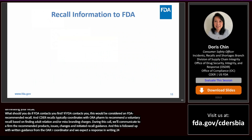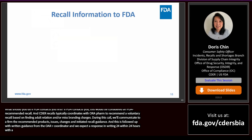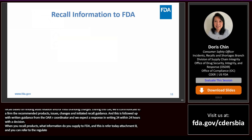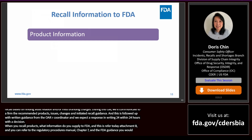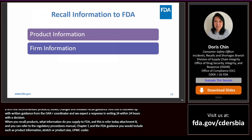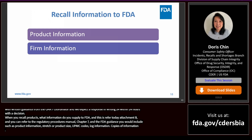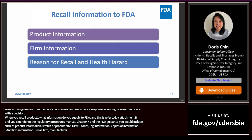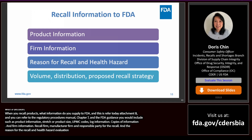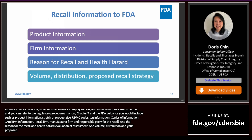When you have made the decision to voluntarily recall your product, what information do you provide to FDA? This information is summarized in Attachment B. Refer to the Regulatory Procedures Manual, Chapter 7, for guidance on what information to include: product information, strength, package size, UPC or NDC codes, lot information, copies of labeling, firm information for the recalling firm and manufacturing firm, the reason for your recall, your health hazard evaluation or assessment, volume of recalled product, its distribution and consignee list, and your proposed recall strategy including copies of recall letters and press release if one was issued.